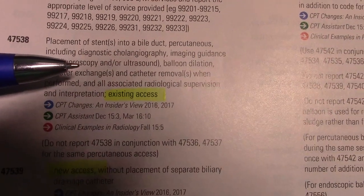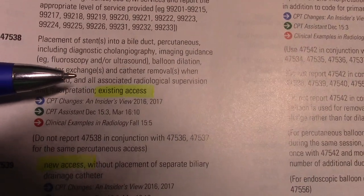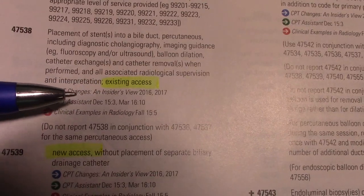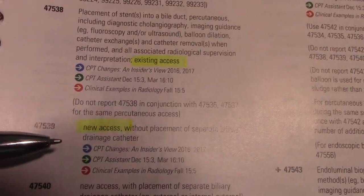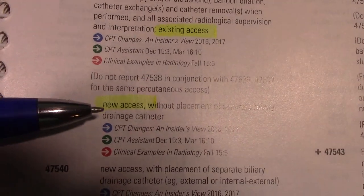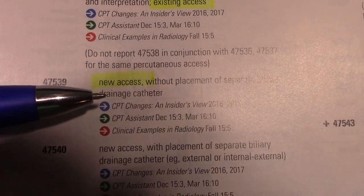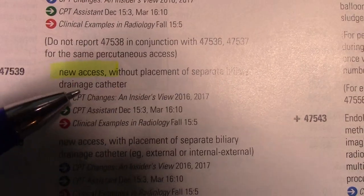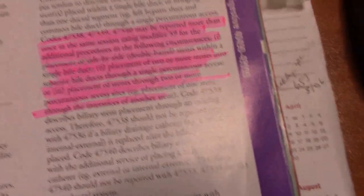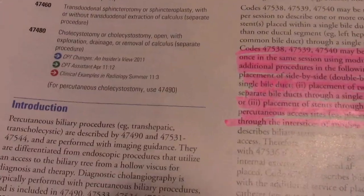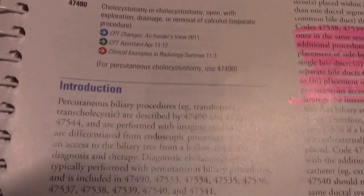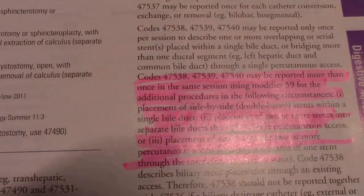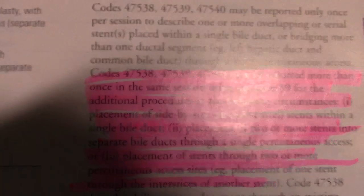Code 47539 comes from the previous code 47538, which talks about placement of a stent into a bile duct, percutaneous, including diagnostic cholangiography and imaging guidance at an existing access. Code 47539 specifies with new access, without placement of a separate biliary drainage catheter. I made sure to read the guidelines on the previous page for that code, because whenever you're reading a code in CPT you need to read any associated guidelines. Code 47539 is grouped in there with 47538.